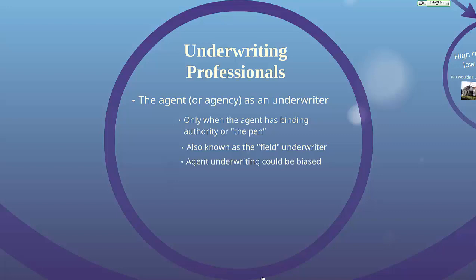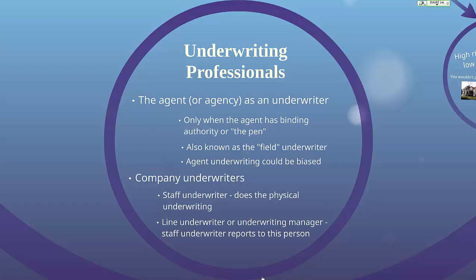On the other hand, the agent is often more aware of the riskiness of each insured because they know them better than an underwriter sitting in a home office far removed from the risk. Then there are company underwriters. First, there's the staff underwriter, who does the physical underwriting. You might start as an assistant underwriter and eventually move up to line underwriter or underwriting manager. Staff underwriters report to line underwriters, who generally don't do day-to-day underwriting but handle more complicated risks and work closely with the agency force to determine where the company should focus its writings.